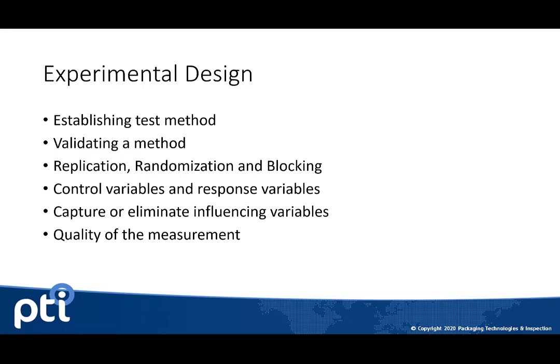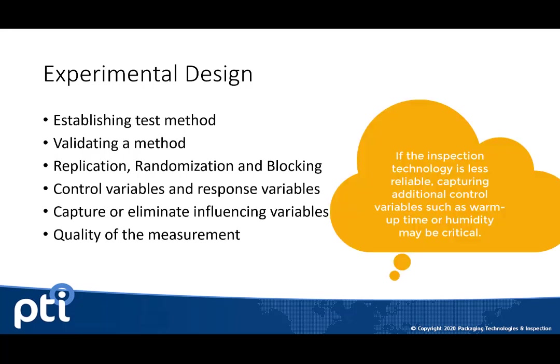Throughout this experiment and any experiment, we want to control as many of the influencing variables as possible. The more control we have of control variables, and the more we can eliminate outside influencing variables, the better data we can have. This also gets down to the quality of the technology and the test method. The quality of that test measurement is at the very foundation of the results you produce.